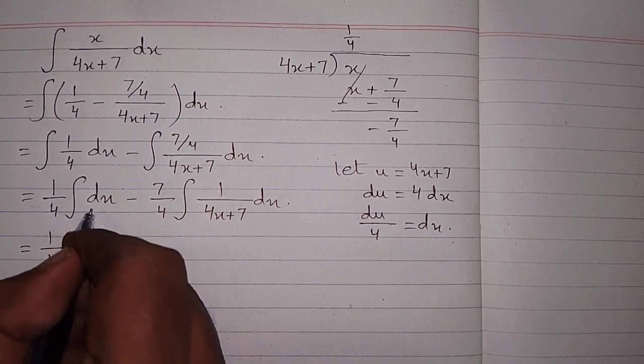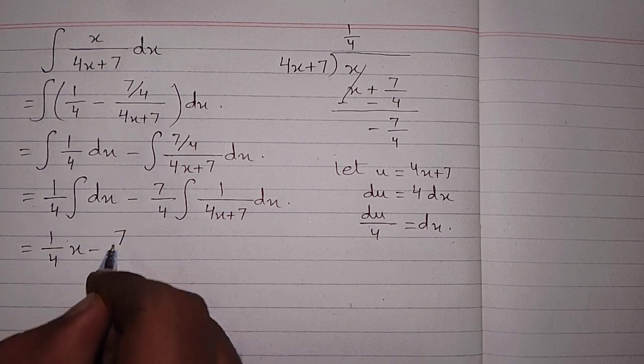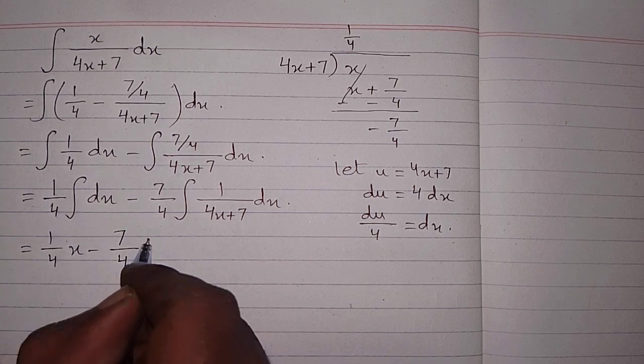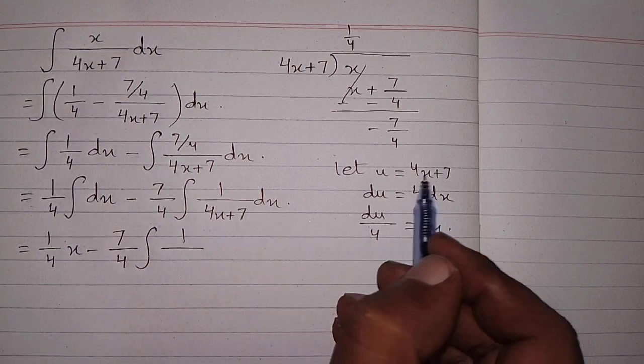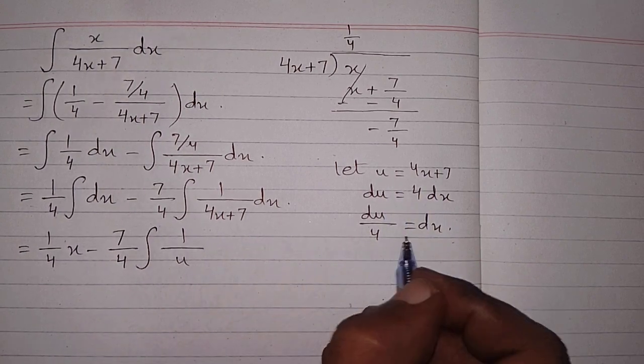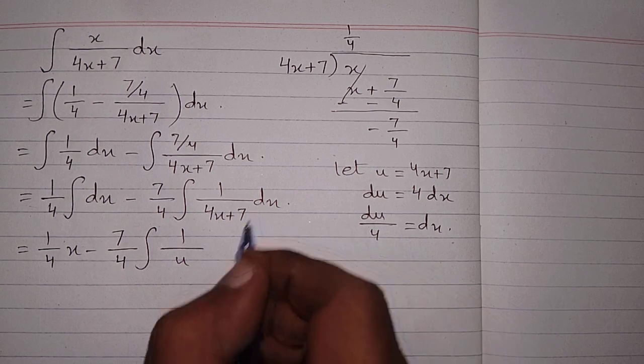Now the integral of dx is x minus 7 upon 4 integral of 1 upon—in place of 4x plus 7 we can write u, and in place of dx we can write du upon 4.